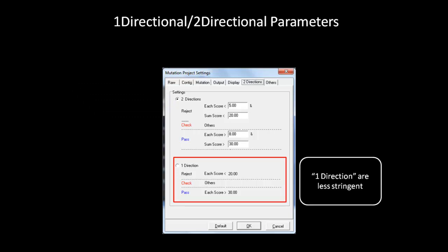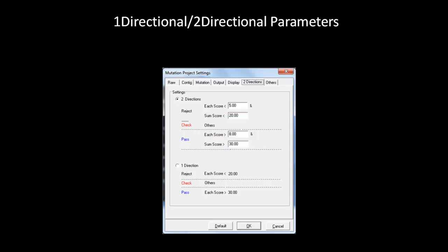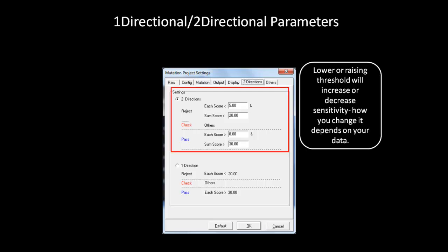If you have a mixture of 1D and 2D data, there are a few things you should know. When analyzing 1D data under 2D parameters, the sum score is reduced by dividing the set number by the square root of 2. If this number is still too stringent, there are a couple of options you can take. The first option is to separate the files into 1D and 2D groups and then analyze each set with the appropriate settings. The second option is to lower the threshold set in the 2D parameters in hopes of calling all the mutations in your 1D samples.